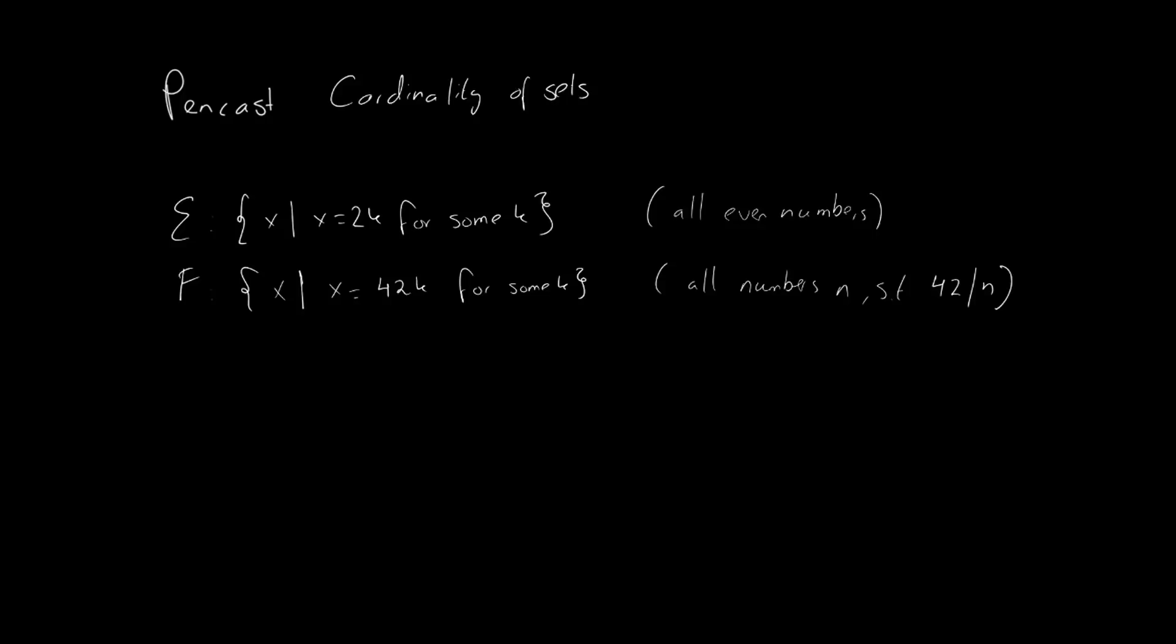In other words x can be written as 42 times some other integer. Now my claim is, unlikely as it may seem, that these two sets have the same size, the same cardinality. Now the question is how do we prove that?